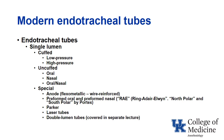Modern endotracheal tubes are typically single lumen cuffed tubes. The cuffs can be designed to exert a low pressure or a high pressure against the tracheal mucosa. The tracheal mucosa is perfused by capillary pressure, which is relatively low. There are still uncuffed tubes and they may be placed orally, nasally, or designed to be used either orally or nasally. Tubes tend to have markings indicating the length and sometimes where a typical position would be at the level of the glottis.